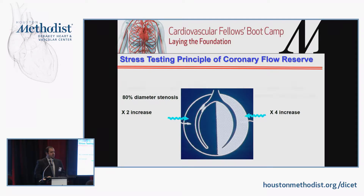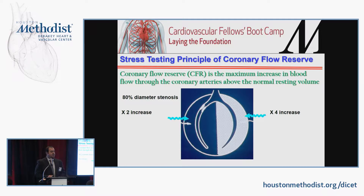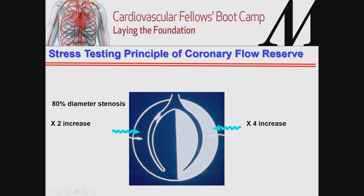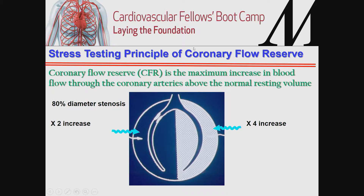The basic principle of coronary flow reserve is that at rest, coronary blood flow is equally distributed through all major coronary artery beds. When we administer pharmacological stress or subject patients to exercise, we try to increase flow through those coronary arteries. A territory supplied by a significantly stenosed artery will not be able to augment flow during stress, while a normal artery can increase flow three to four fold — that is the concept of coronary flow reserve.